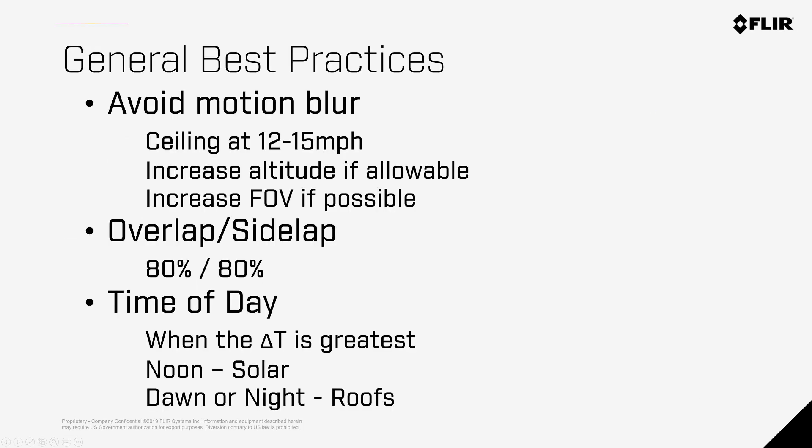Here are some general guidelines when creating orthomosaics. Firstly, you want to avoid motion blur by flying low enough to serve the purpose but slow enough to get good imagery — a standard speed will be no higher than 12 to 15 miles per hour. If you're getting motion blur still, you can increase the altitude, but only to a point where you still get enough pixels on target. For mapping, the overlap and sidelap requirements are roughly 80% by 80% for most processing engines. When you do individual image inspection, sidelap can be reduced to about 20%, speeding up capture time but increasing analysis time.